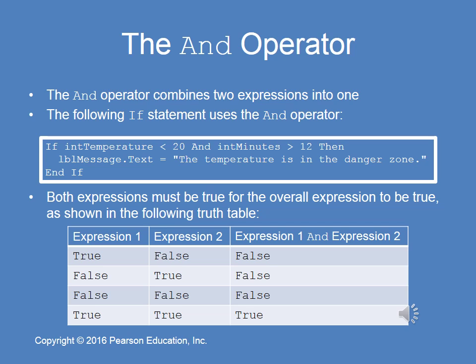The AND operator combines two expressions into one compound Boolean expression. Here's a coded example: if intTemperature < 20 And intMinutes > 12, then... If one is true and the other is false, the entire expression becomes false. Here's the truth table for AND: True AND False = False; False AND True = False; False AND False = False. The only way to get true with AND is if both Boolean expressions are true.